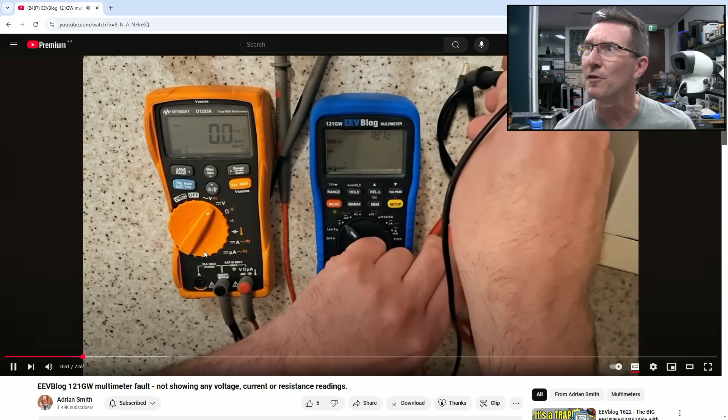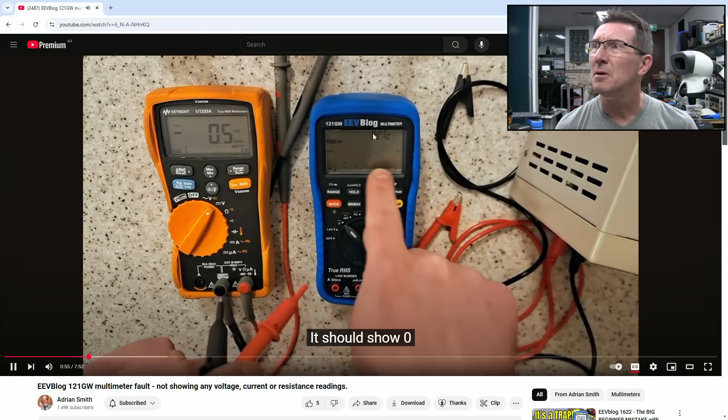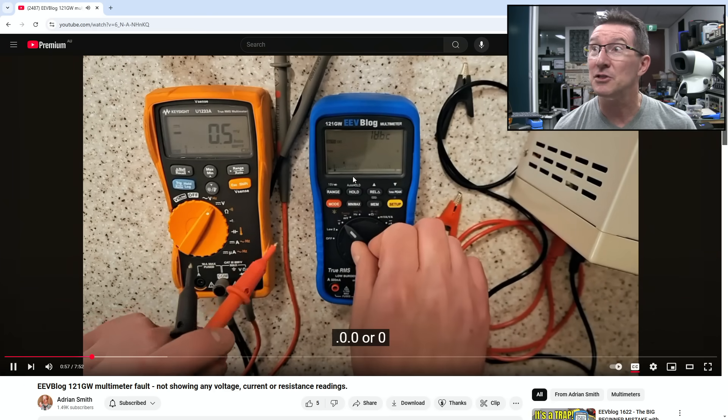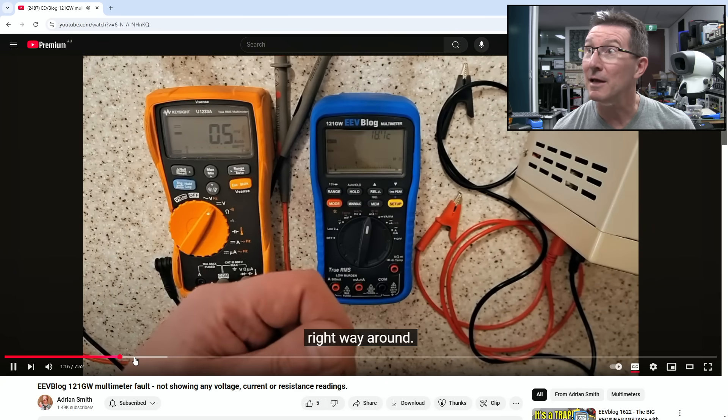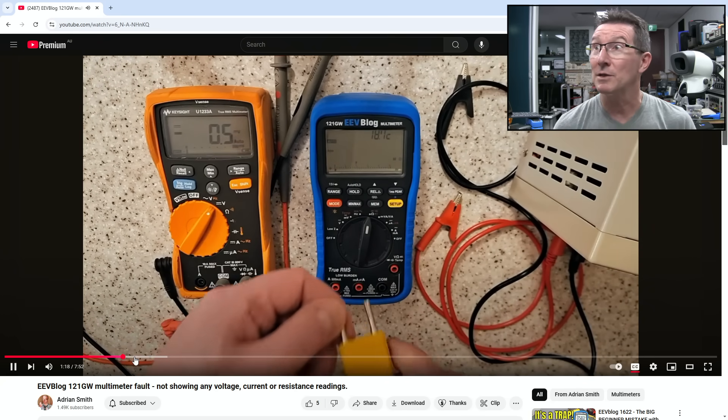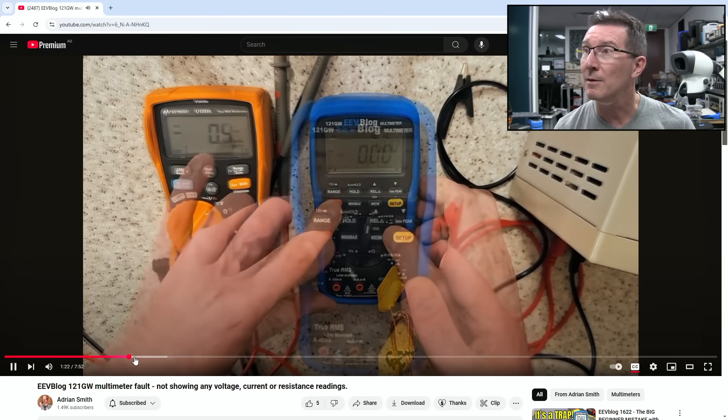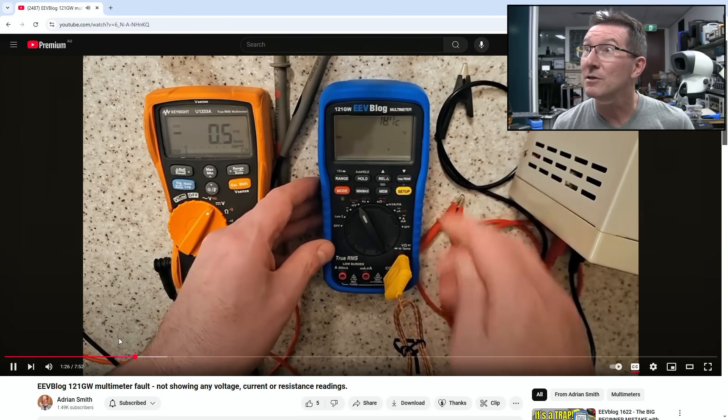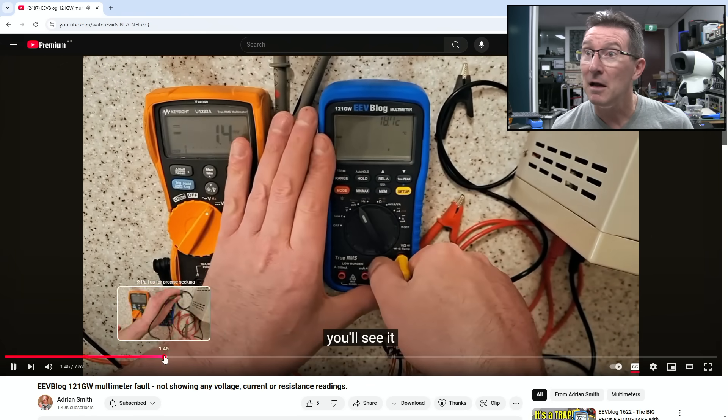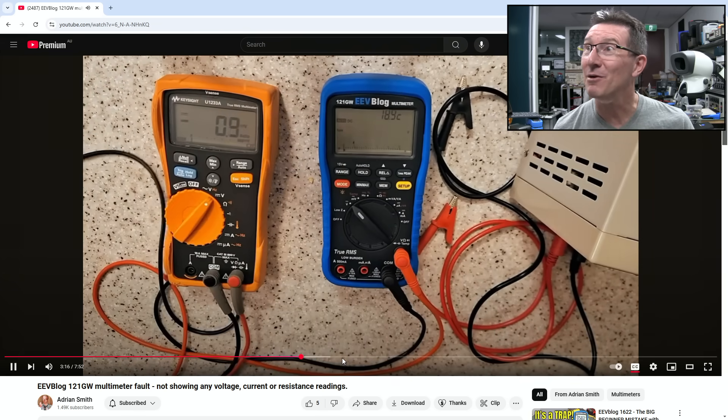He tries to measure something with it. It's in auto mode, auto DC mode. It should show zero, zero, zero. It's just not updating. It's not updating. In ohms, once again, there's no reading. There's no overflow reading for when there's nothing connected. Millivolts, exactly the same thing. You can see the display. It's just no updating whatsoever.